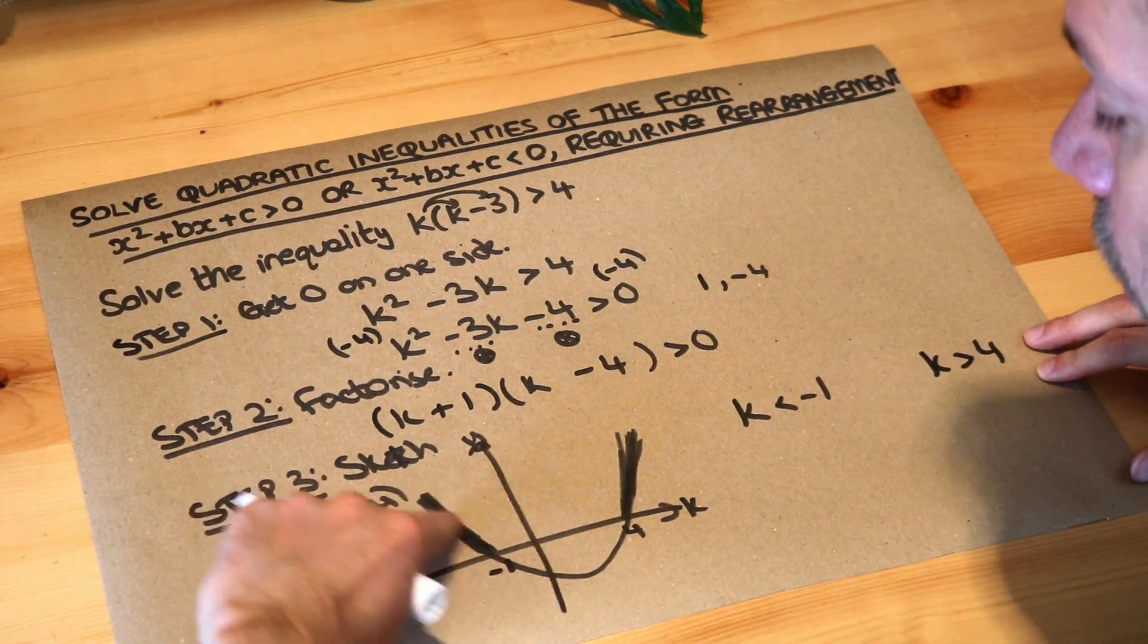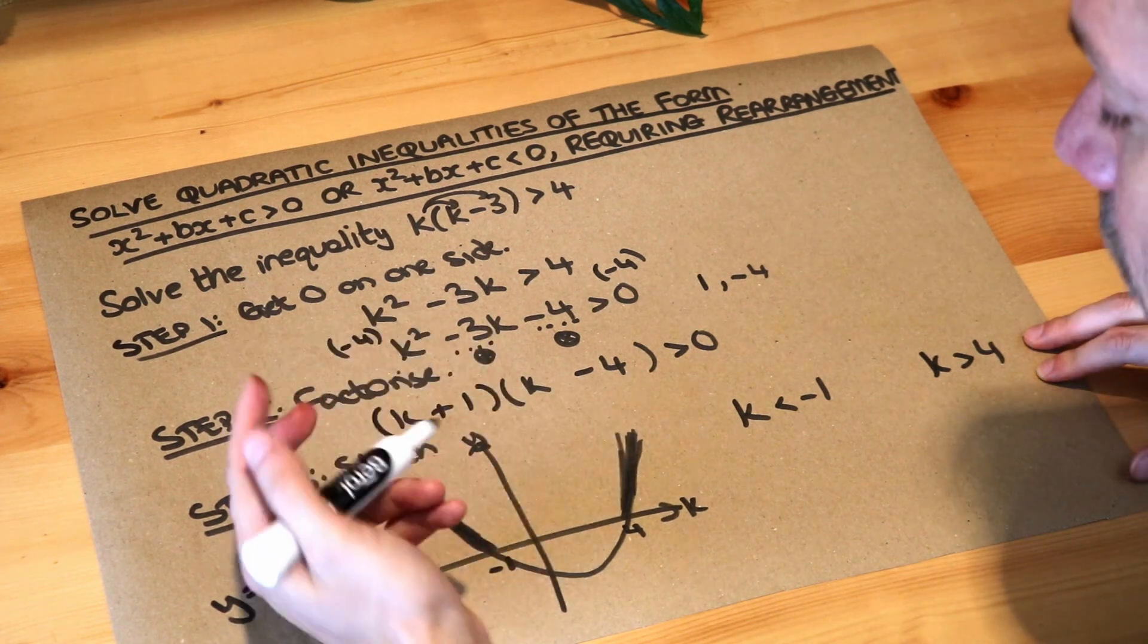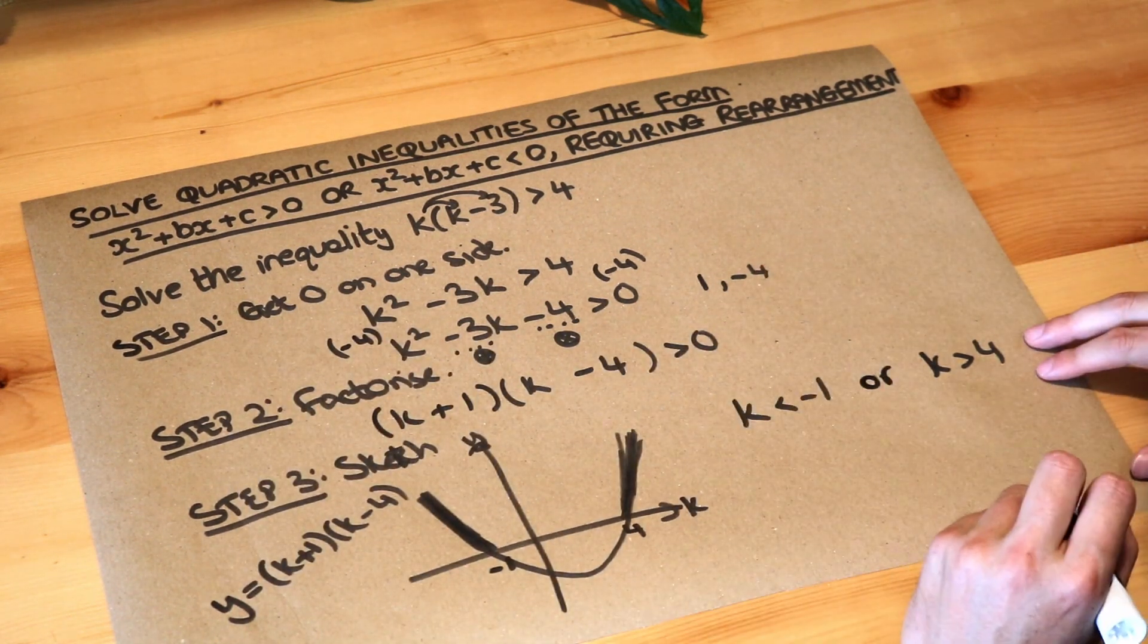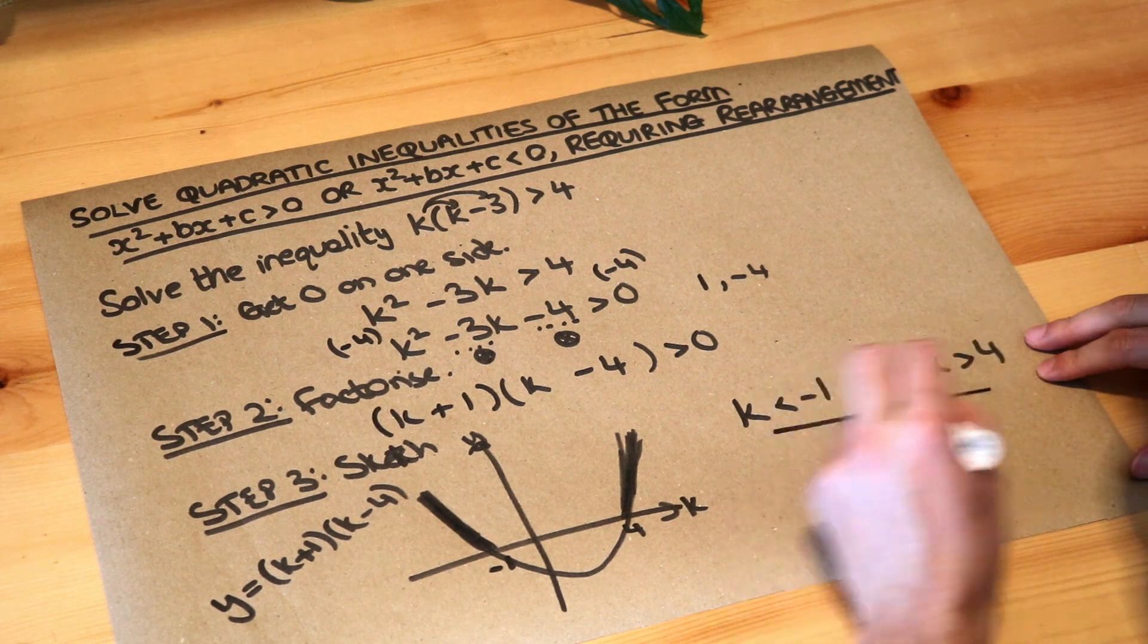And remember, you're either in this part of the line or in this part of the line. You can't be in both at the same time. So you write 'or' here. And that is the final answer.